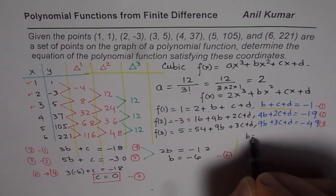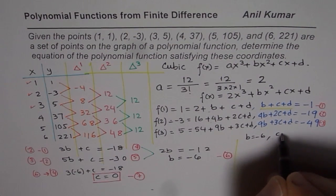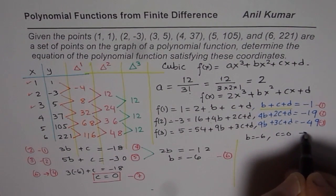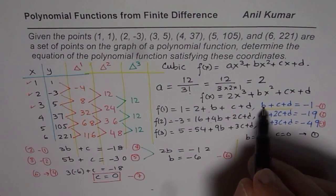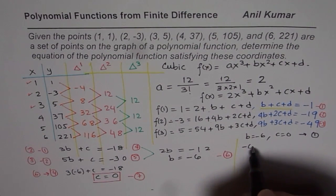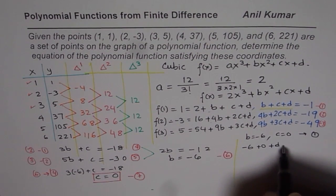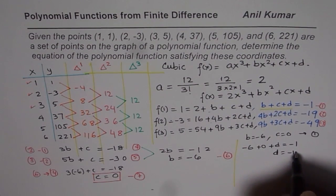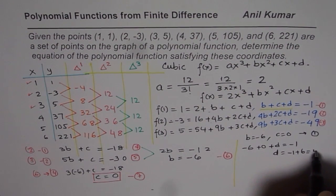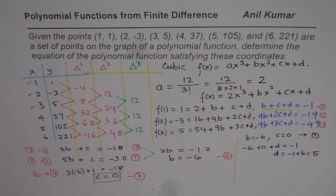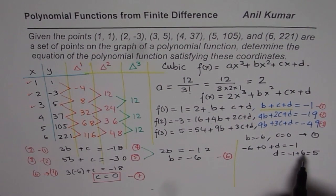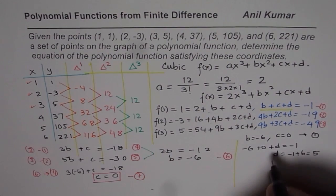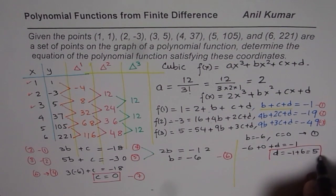So we will substitute b, c and d. So what we got here is b equals -6, c equals 0. We are substituting that in equation 1. So when I do that, b is -6, c is 0, plus d equals -1. And so d is equals -1 plus 6, which is indeed 5. So we get d as 5.